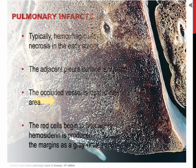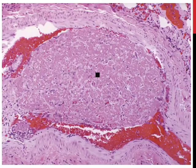This figure shows the gross appearance of a small roughly wedge-shaped hemorrhagic pulmonary infarct of recent occurrence. This figure shows a thromboembolism in the peripheral pulmonary arterial branch. If there are numerous small peripheral thromboembolisms, then the vascular bed is diminished and pulmonary hypertension may occur.